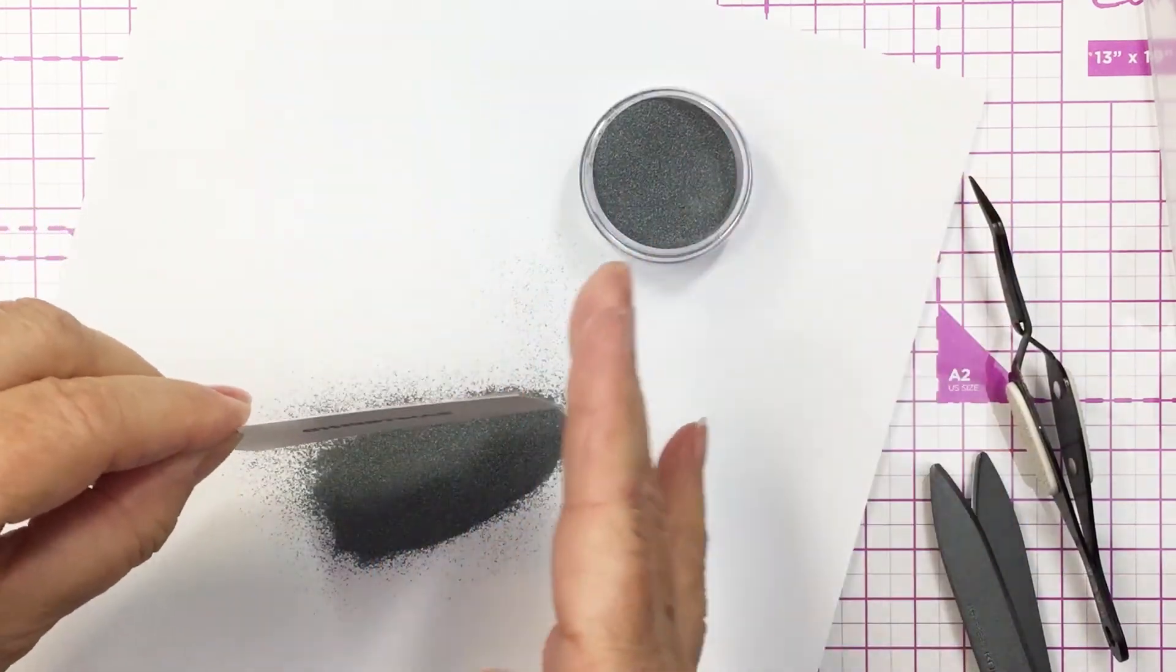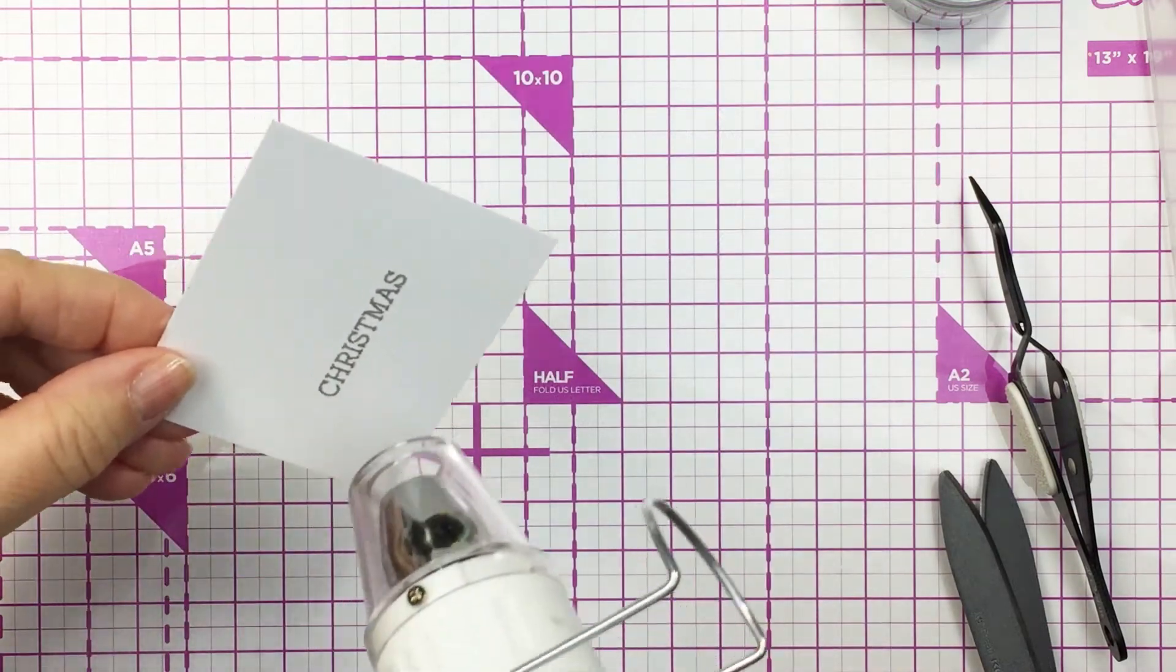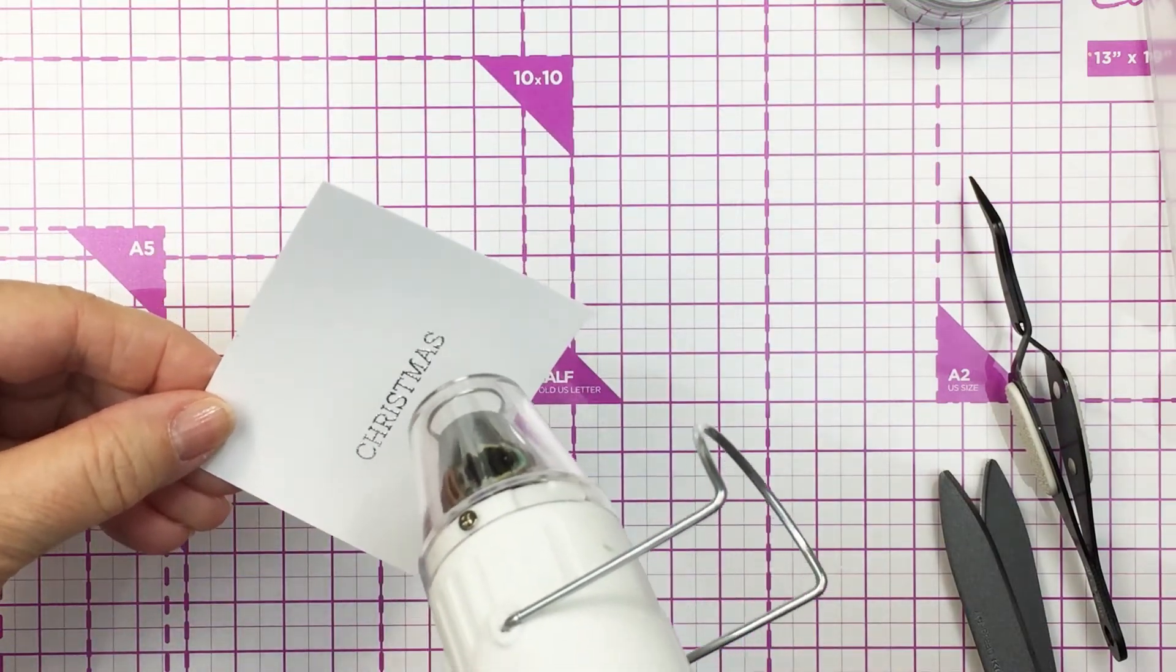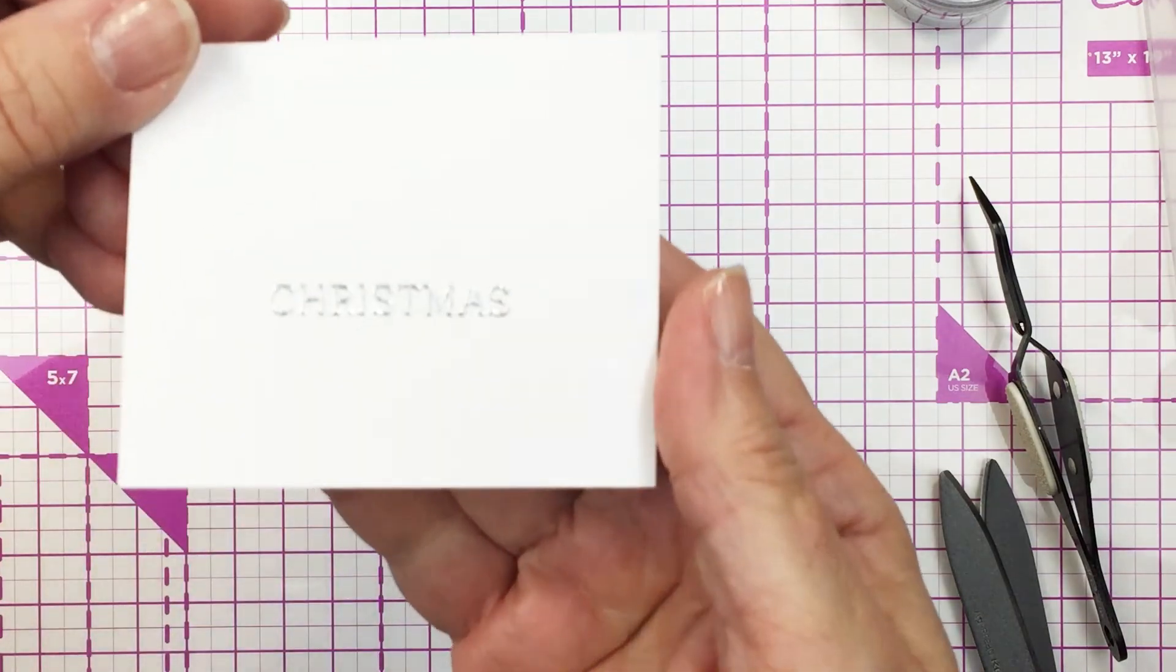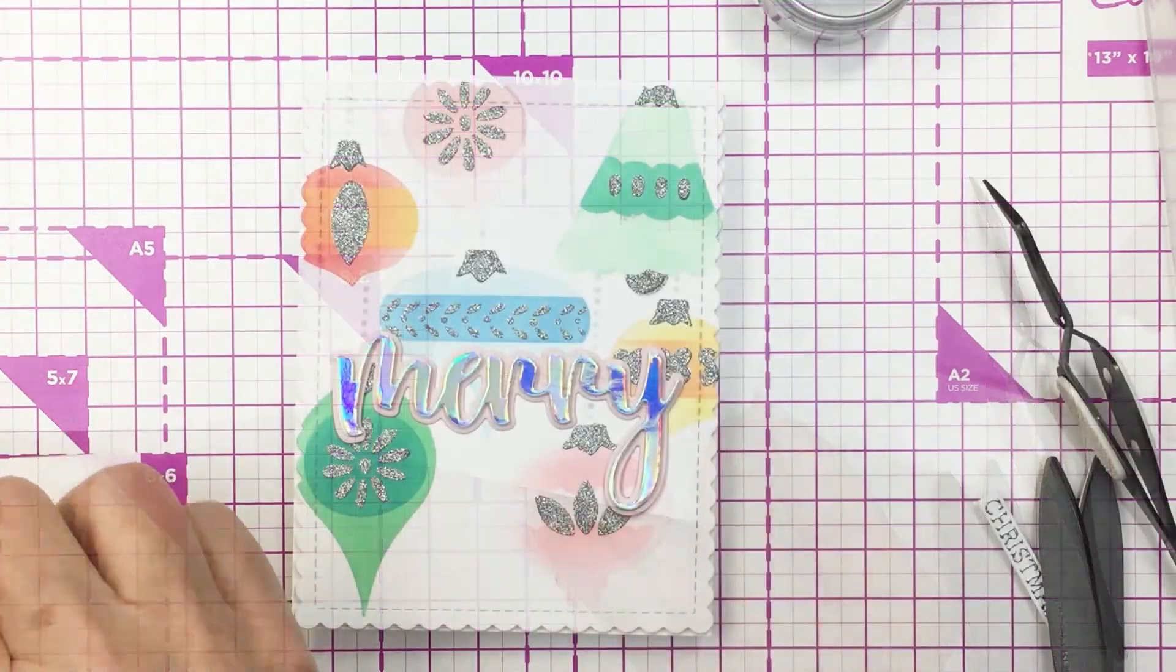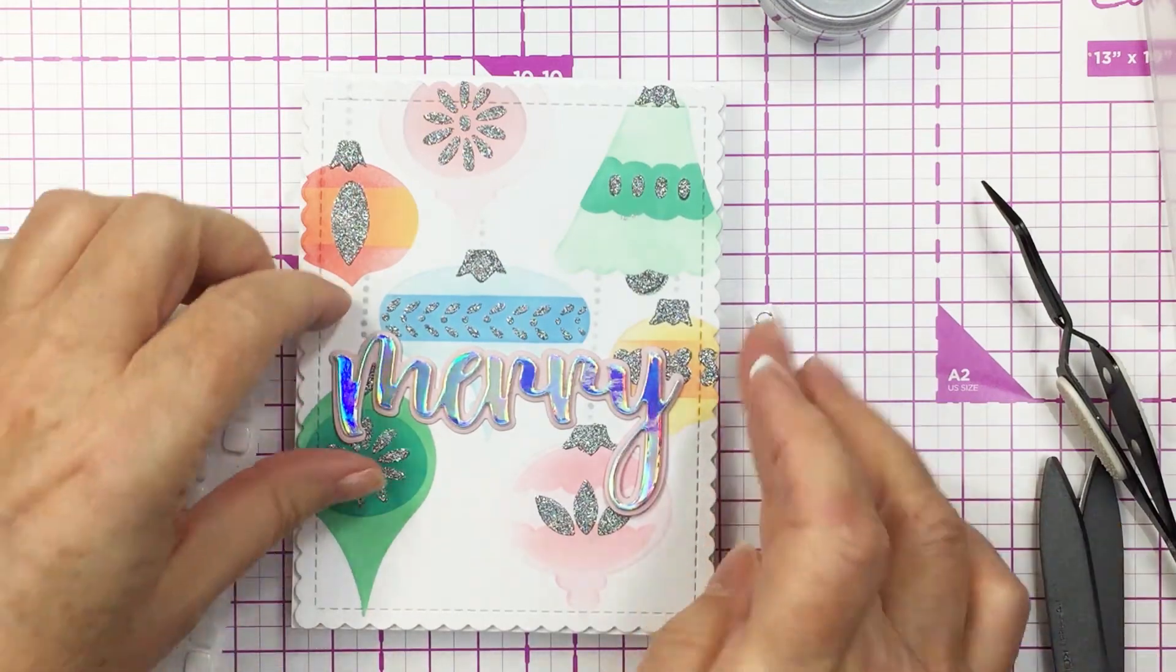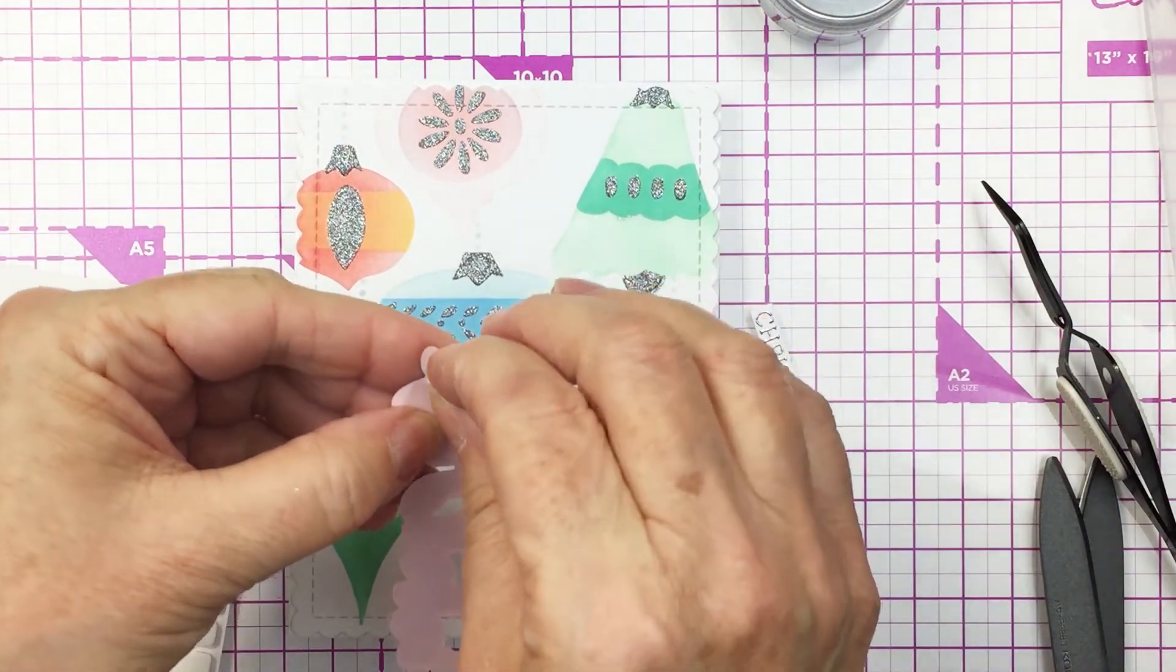Now you can see I've used some silver embossing powder over top of the embossing ink, just melting that with my heat tool. I will trim that out and that is going to look so nice with that holographic cardstock and then of course that silver glitter glaze that's on the card.